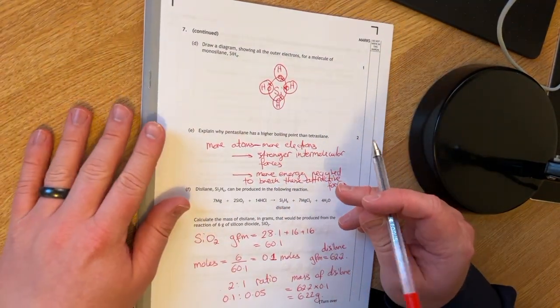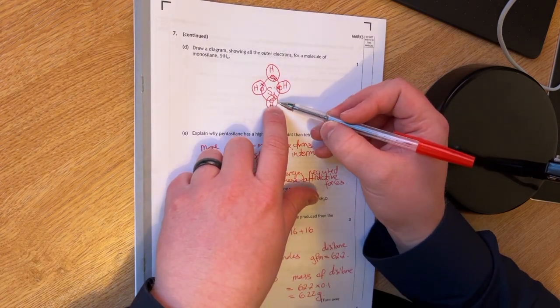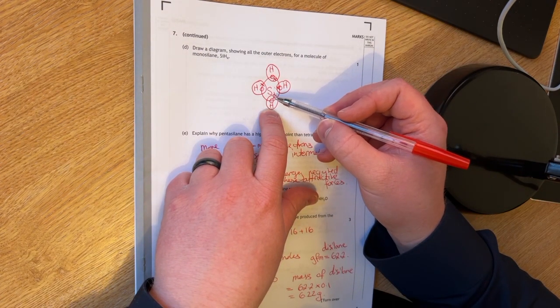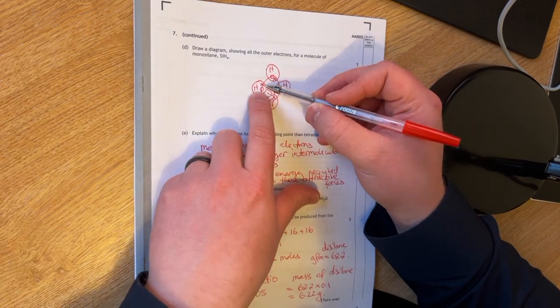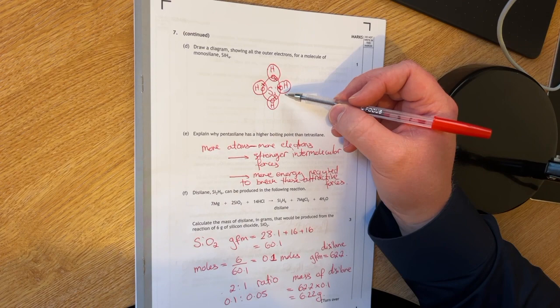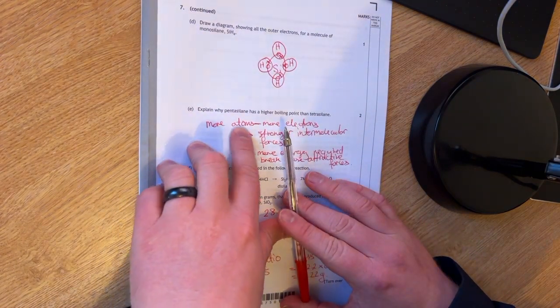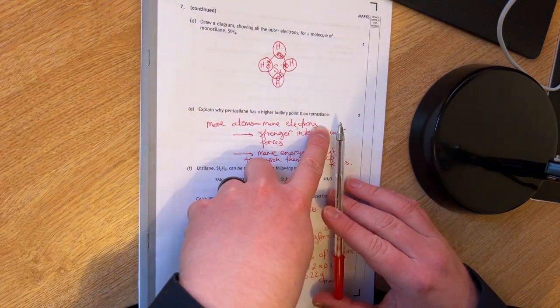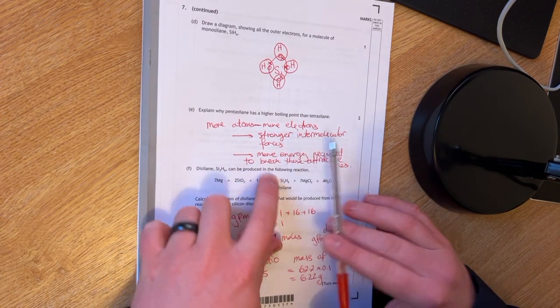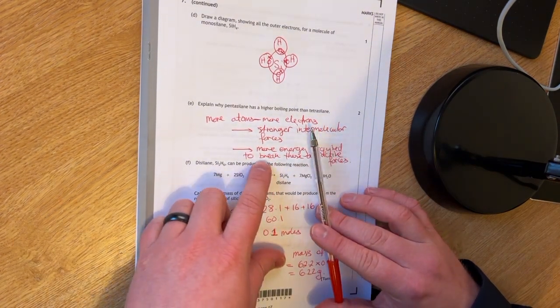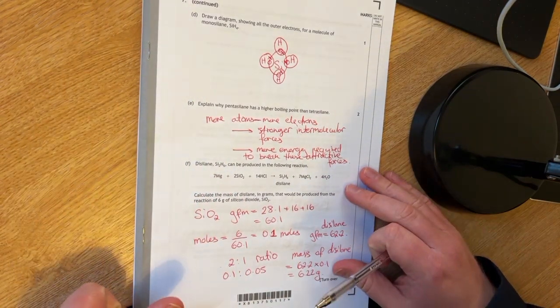You have to draw a diagram showing all the outer electrons for a molecule of monosilane. This is my little drawing here. I've made a little bit of a mess of it. However, I think it should be okay. It clearly shows all of the electrons inside the bonds. Explain why pentasilane has a higher boiling point than tetrasilane. So pentasilane has more atoms, which means it's got more electrons, stronger intermolecular forces, and therefore you need more energy to break these attractive forces. Hence, the boiling point is larger.